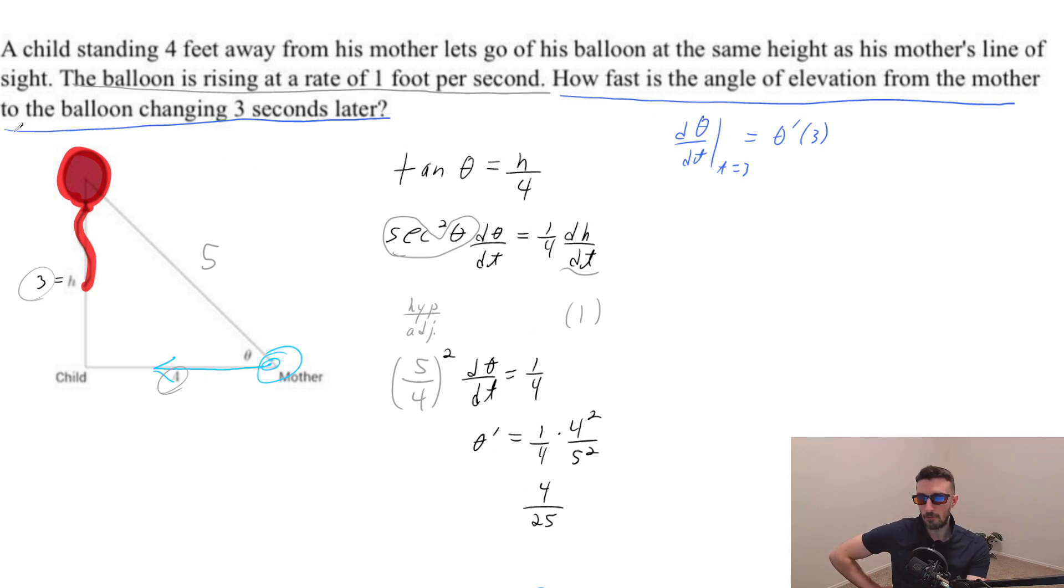That is how fast the angle of elevation, which is the angle at which mom has to change her line of sight, and that line of sight is rising or you could say elevating. And that is what our angle is. But anyway, we're figuring out how fast that's changing. So that's actually our theta prime, which is the thing that they wanted. So we're just going to say the final answer here is four over 25.